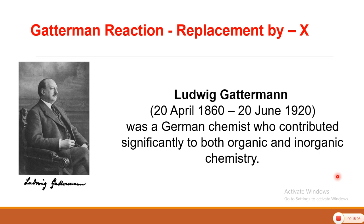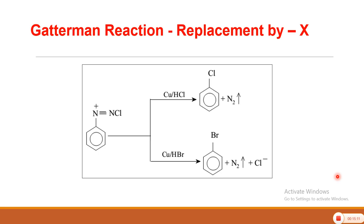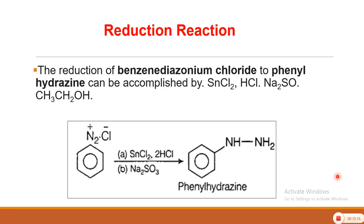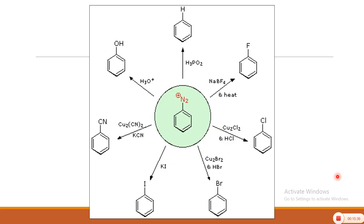In the Gatterman reaction, we replace copper salts with copper powder — that is the only difference, and replacement is by chlorine and bromine. In the reduction reaction, we use SnCl₂/HCl, sodium sulphite, and ethanol as the solvent system, converting Benzene Diazonium Chloride into phenyl hydrazine, which is also an important reagent in various synthetic applications. Every reaction is related to industrial application, and these reactions are very important in synthetic organic chemistry because Benzene Diazonium Chloride is an intermediate that can be converted into desired products by replacement of the N₂Cl group. Next time we will see coupling reactions and synthetic applications. Thank you.